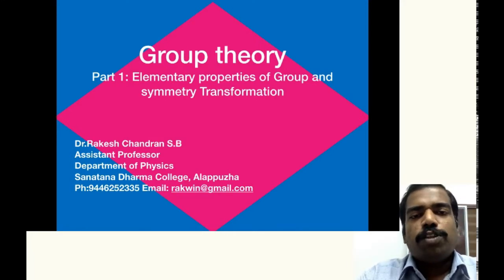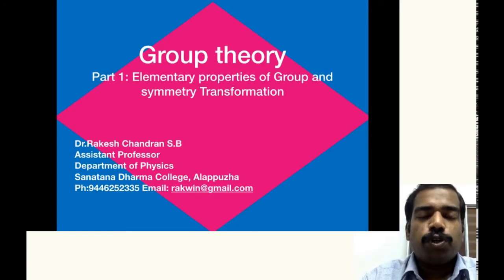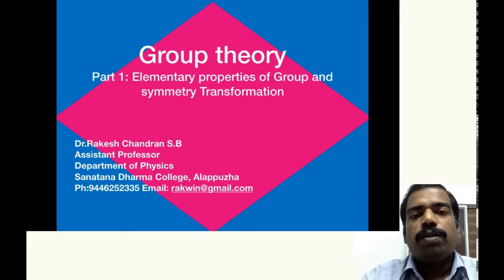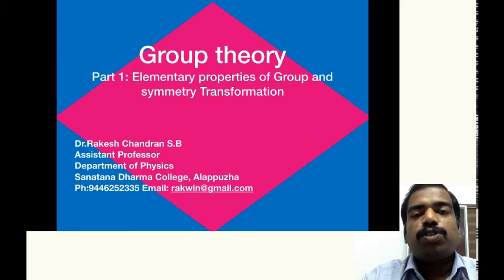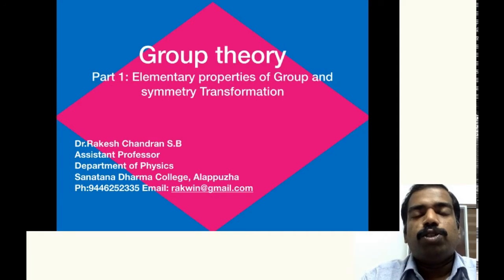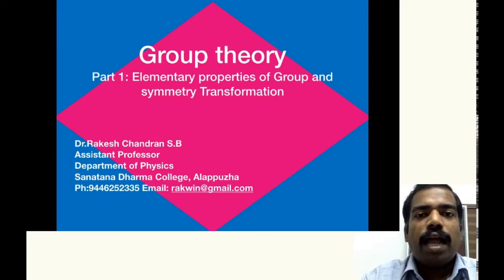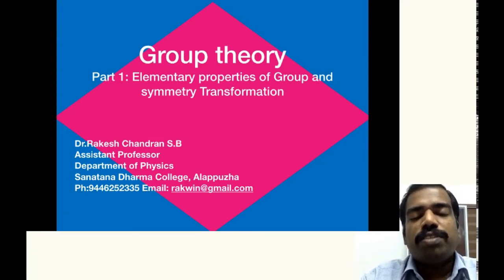After the advancement of quantum mechanics in 1925, physicists made use of group theory as a tool to solve many problems in quantum mechanics. Physicists also use group theory to find the atomic spectra, to find the symmetry of atomic systems, etc. It has wide applications nowadays in solving many physical problems.